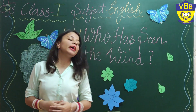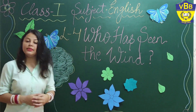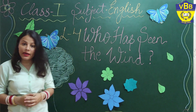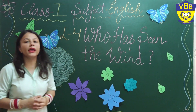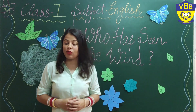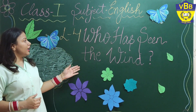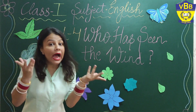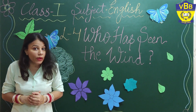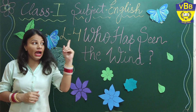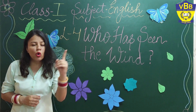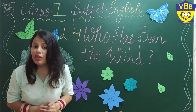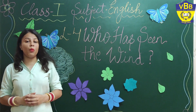Wind, in simple words, is air — the movement of air. When the air is moving here and there, it is called wind. The name of this poem, 'Who Has Seen the Wind?', is asking us a question: who has seen the wind? 'Seen' means when we are looking at anything.